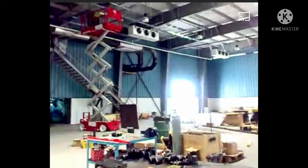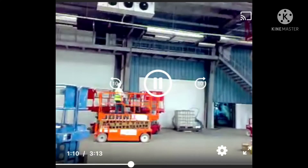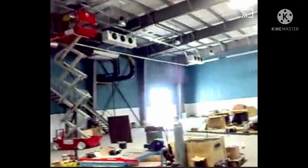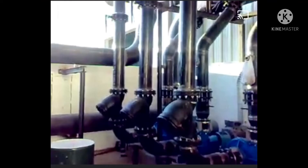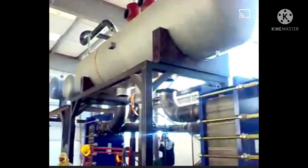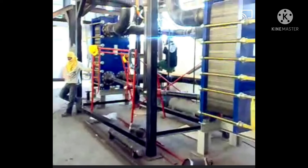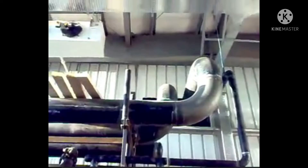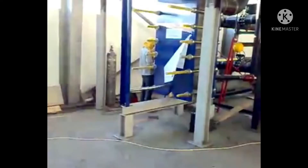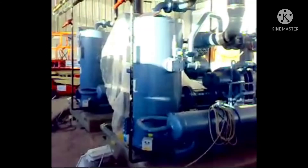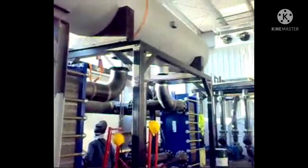Ang pinaka-factor dito kung ano ang pipiliin mong chiller ay ang kanilang freezing point. Kahit negative 6 degrees, hindi pa yan magbe-freeze. Kaya, yun ang pinaka-consideration sa pagpili ng water chiller o glycol chiller — ang freezing point niya. Tandaan natin na pure glycol o glycol mixed with water ay may mas mababang freezing point kaysa pure water, which is only 0 degrees centigrade.